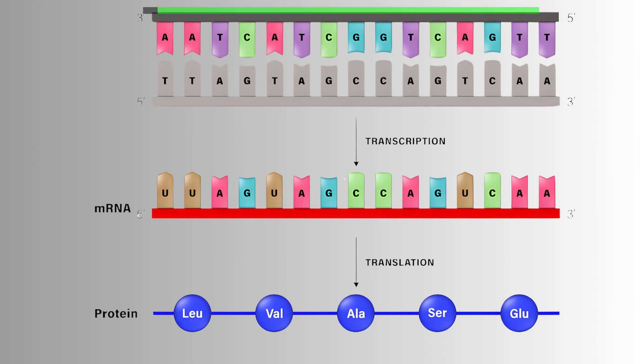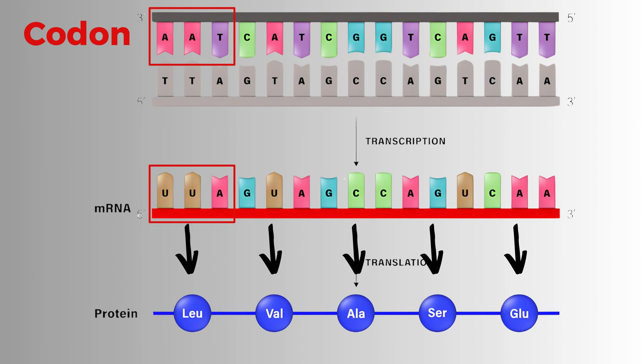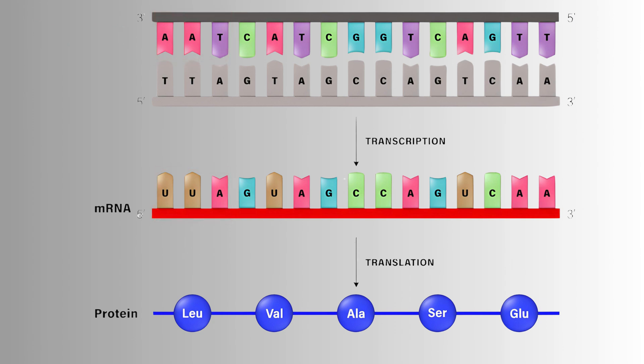However, DNA is not read one nucleotide at a time, but in triplets called codons. Each codon specifies a particular amino acid, meaning that the DNA sequence directly determines which protein will be synthesized. For example, the codon ATG codes for the amino acid methionine and also serves as the start signal for protein synthesis. On the other hand, some codons function as stop signals, terminating the translation process.